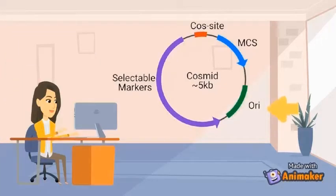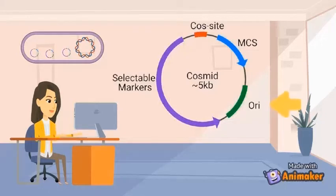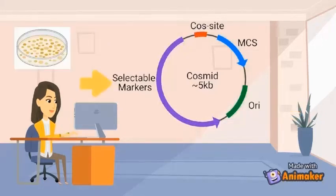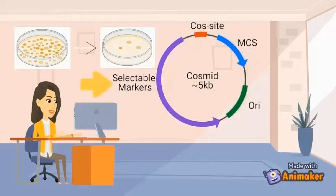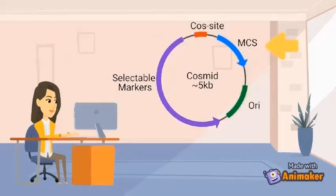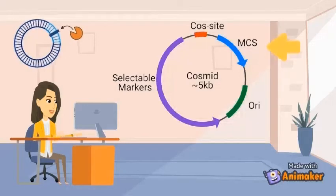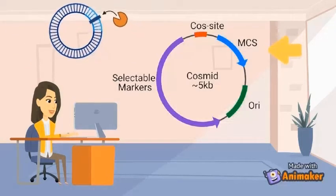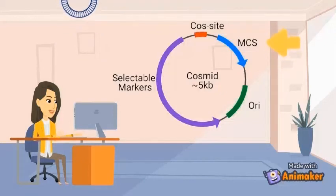It has an origin of replication from plasmid DNA for independent replication. It has antibiotic selectable marker genes from plasmid DNA. A specially designed multiple cloning site, MCS, contains recognition sequences for restriction endonucleases to cut and insert foreign DNA.